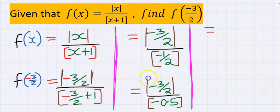The numerator contains absolute value function. Absolute value function rejects negative. Hence, 3 over 2 will return without the negative.